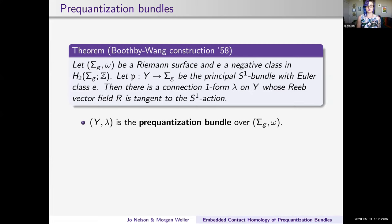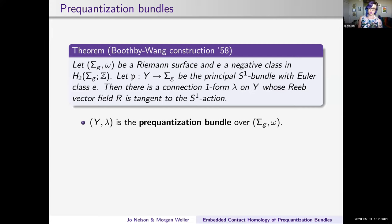Booth, B, and Wang realized that there's going to be a connection one-form on this bundle whose Reeb vector field is tangent to the S¹ action. Because of the connection one-form, the pullback of omega is equal to d lambda. So we have this nice interplay between the symplectic geometry of the base and the Reeb dynamics of the bundle. We'll make use of this later when actually computing the embedded contact homology differential. This bundle is called the prequantization bundle over the base.